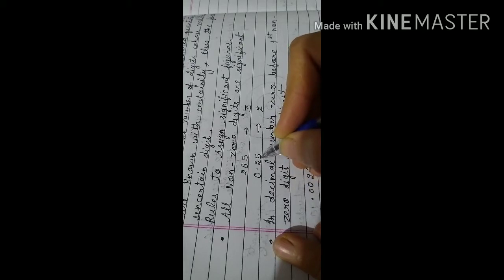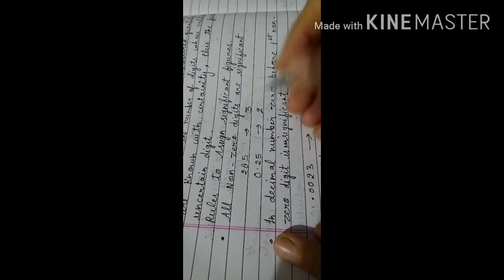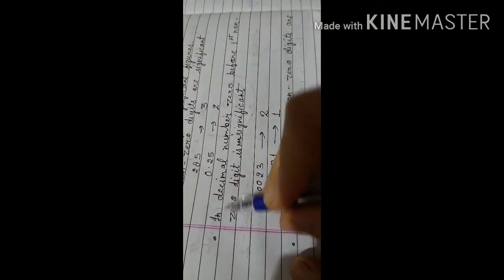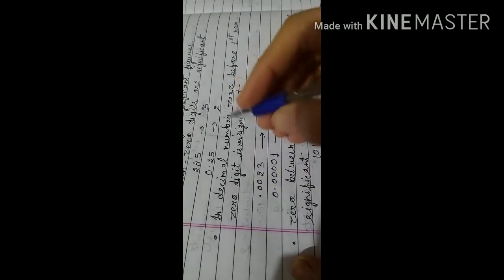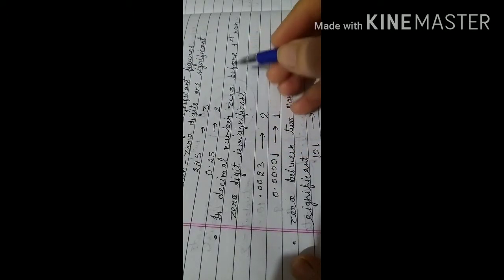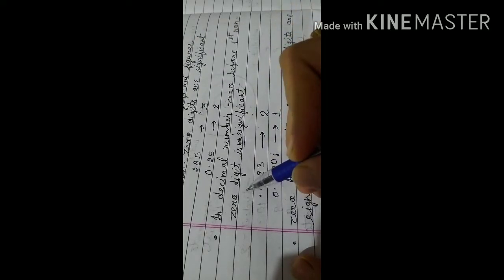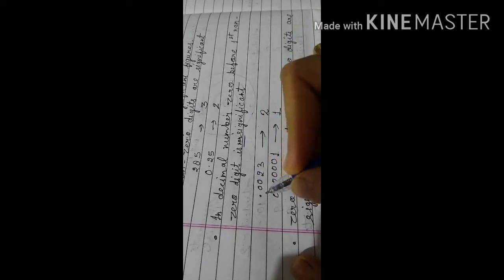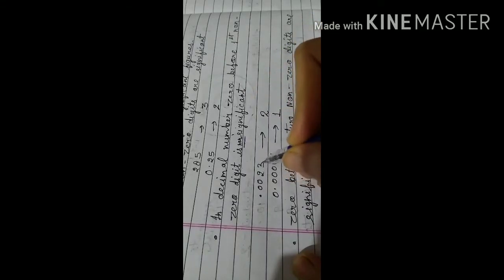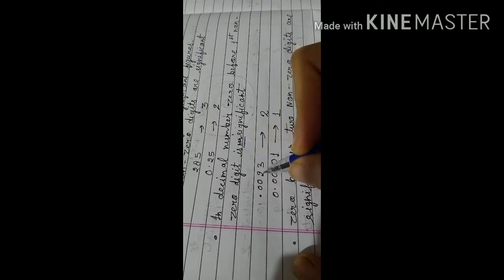The second rule: in a decimal number, the zero before the first nonzero digit is not significant. The zero which comes before the nonzero digit is not countable. For example, 0.0023 — as per the rule, these leading zeros are not to be considered. The nonzero digits are 2 and 3, giving a total of two significant figures.